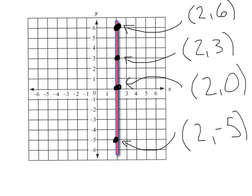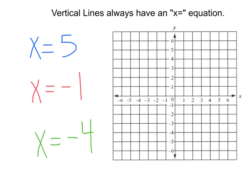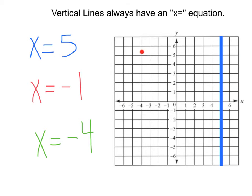a vertical line always leads to an x equals graph. In this case, x would equal 2. If we wanted to graph the equation x equals 5, we are going to get a vertical line at x equals 5. If we wanted to graph x equals negative 1,